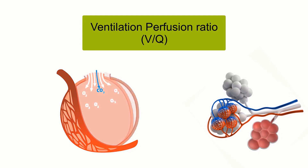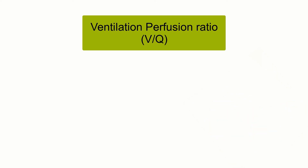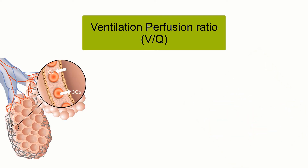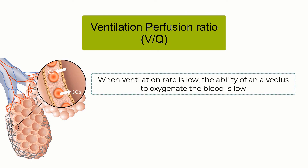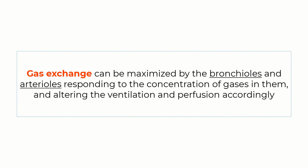Increasing airflow to match the increased blood flow brings the ventilation-perfusion ratio as close to 1 as possible, maximizing gas exchange. Similarly, blood vessels can reduce perfusion in response to low ventilation. When ventilation rate is low, the ability of an alveolus to oxygenate the blood is low. Low oxygen levels in the blood cause vasoconstriction in pulmonary arterioles. This reduces blood flow to an alveolus where ventilation is low, bringing the ventilation-perfusion ratio at that alveolus closer to 1, so that a large amount of blood is not sent to an alveolus with a low amount of oxygen. By vasoconstricting, much of the blood from the arteriole is diverted to other alveoli. Thus, gas exchange can be maximized by the bronchioles and arterioles responding to the concentration of gases in them and altering the ventilation and perfusion accordingly.